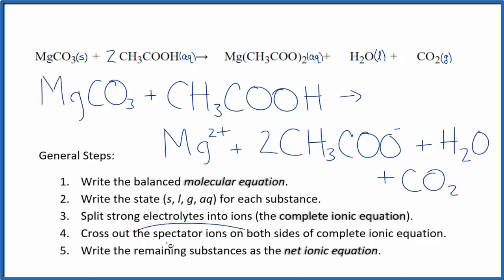Now we can cross out spectator ions. They're the same on both sides of the equation, except there aren't any spectator ions. So we don't cross anything out. So this is the net ionic equation for MgCO3 plus CH3COOH, magnesium carbonate plus acetic acid. I'll clean it up and write the states. We'll have our net ionic equation.